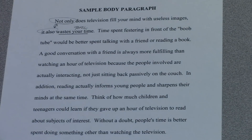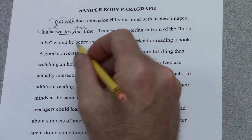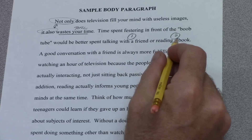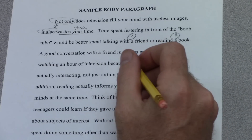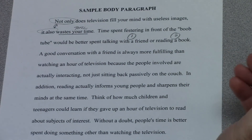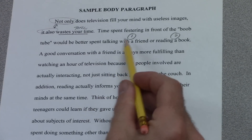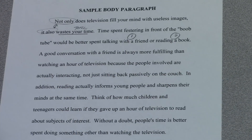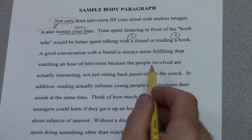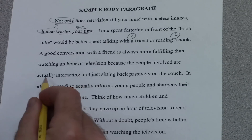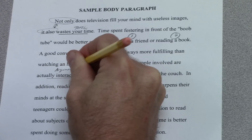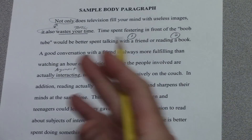The structure they use here is really nice. 'Time spent festering in front of the boob tube would be better spent talking with a friend or reading a book.' They give you two alternatives to spending time in front of the TV. The first one is talking with a friend, the second is reading a book. Now they carefully explain why talking with a friend is better than watching TV. 'A good conversation with a friend is always more fulfilling than watching an hour of television because the people involved are actually interacting, not just sitting back passively on the couch.' I like their argument — it's a good, logical, clear argument that you're actually interacting, not just sitting back passively.